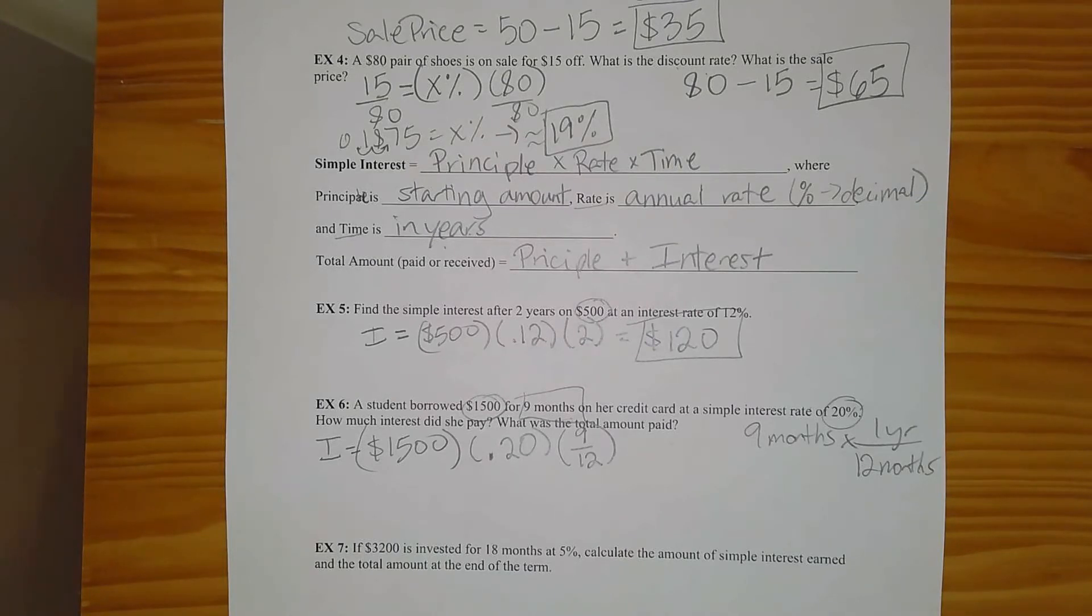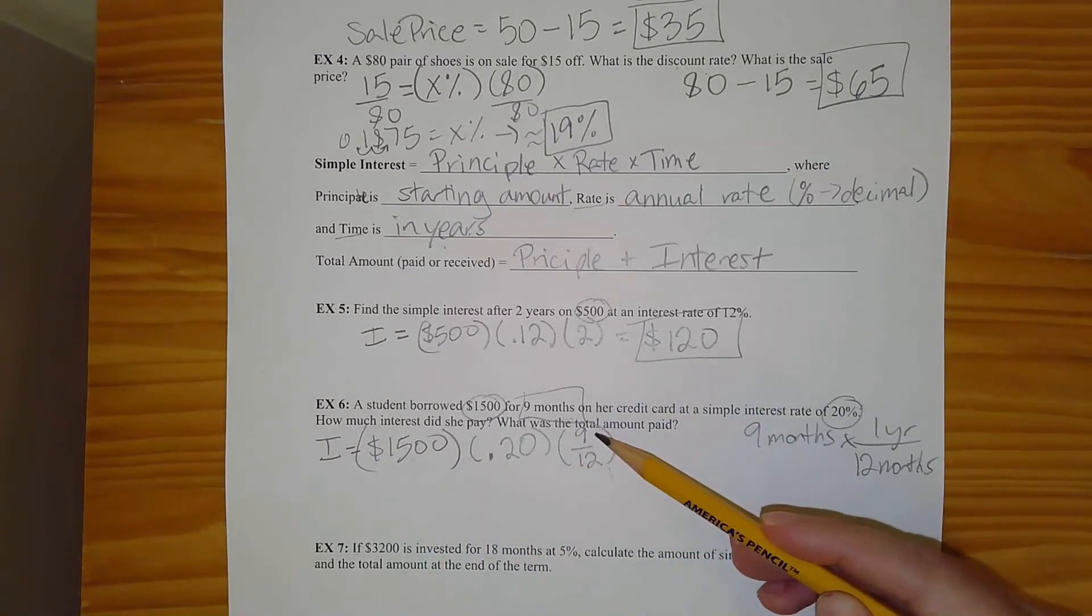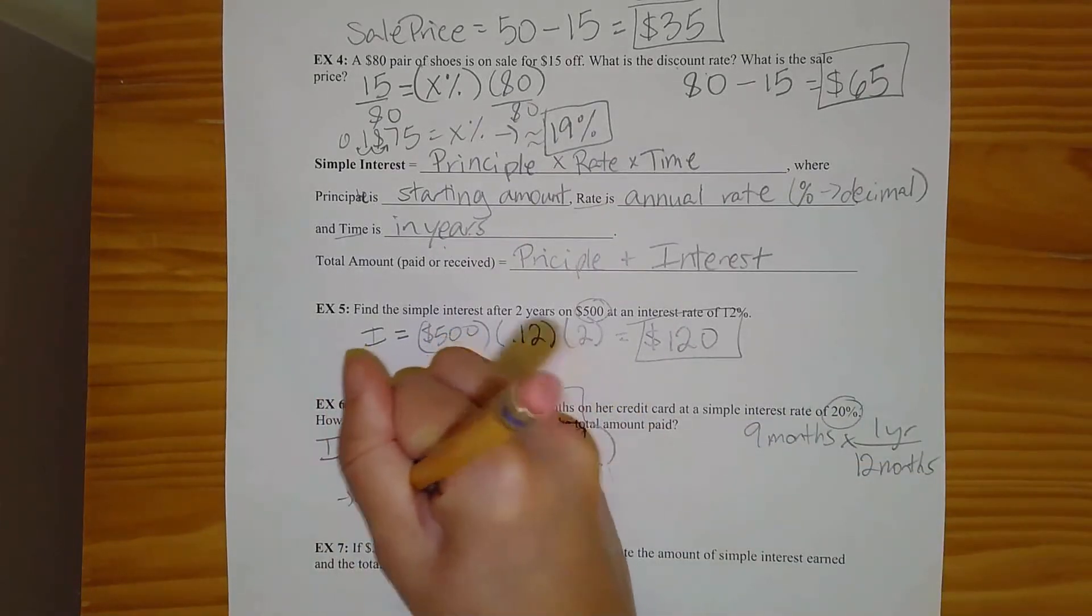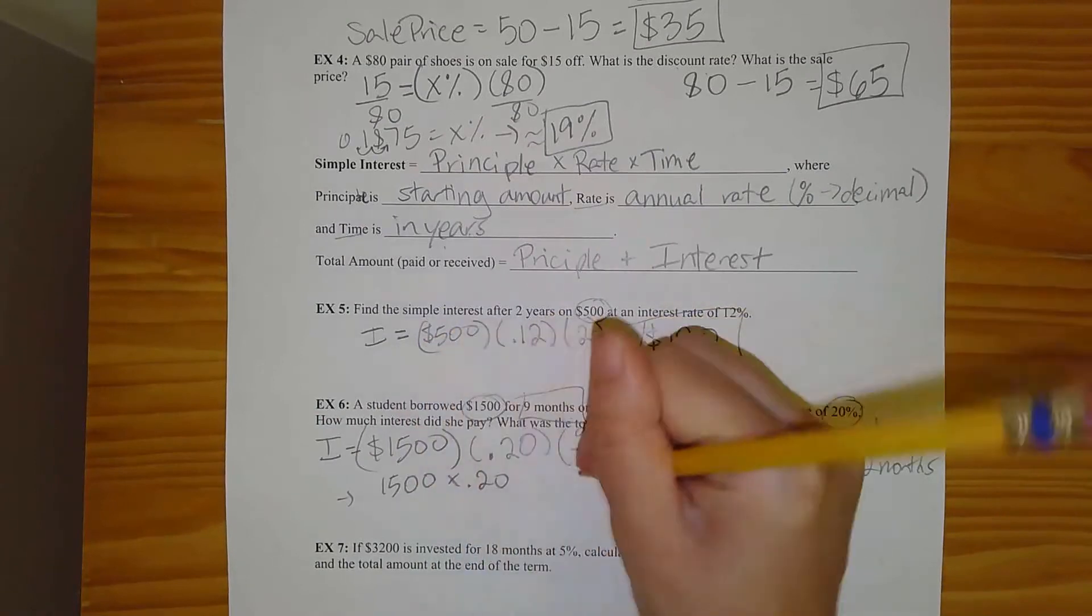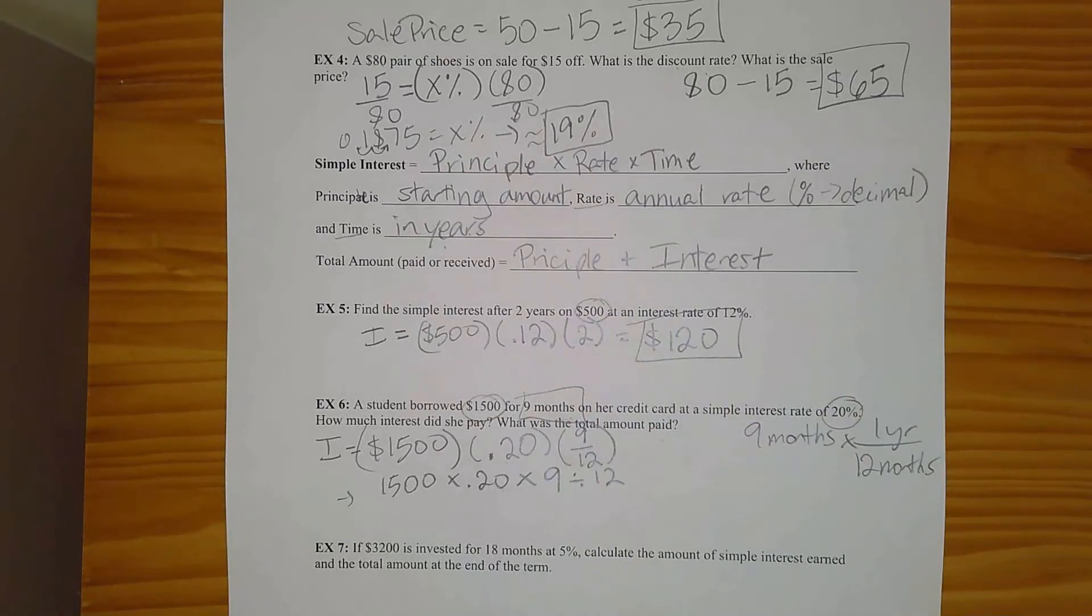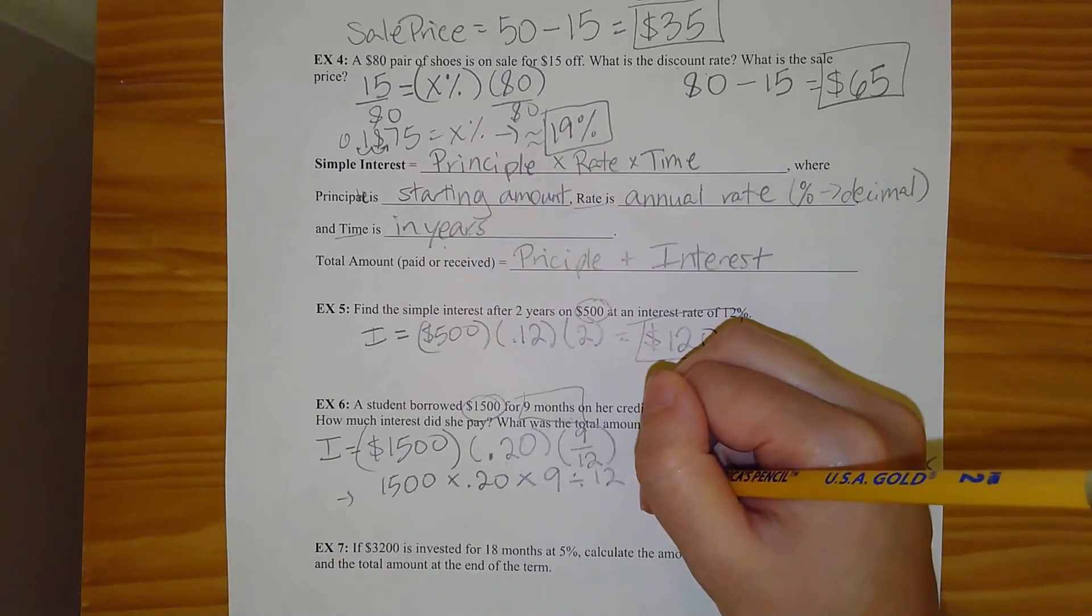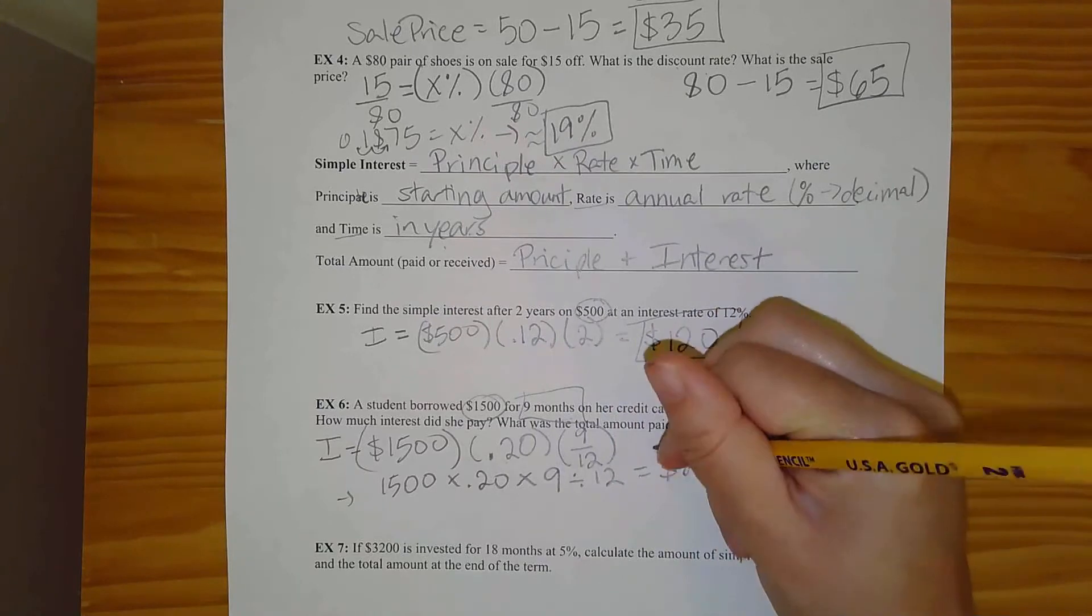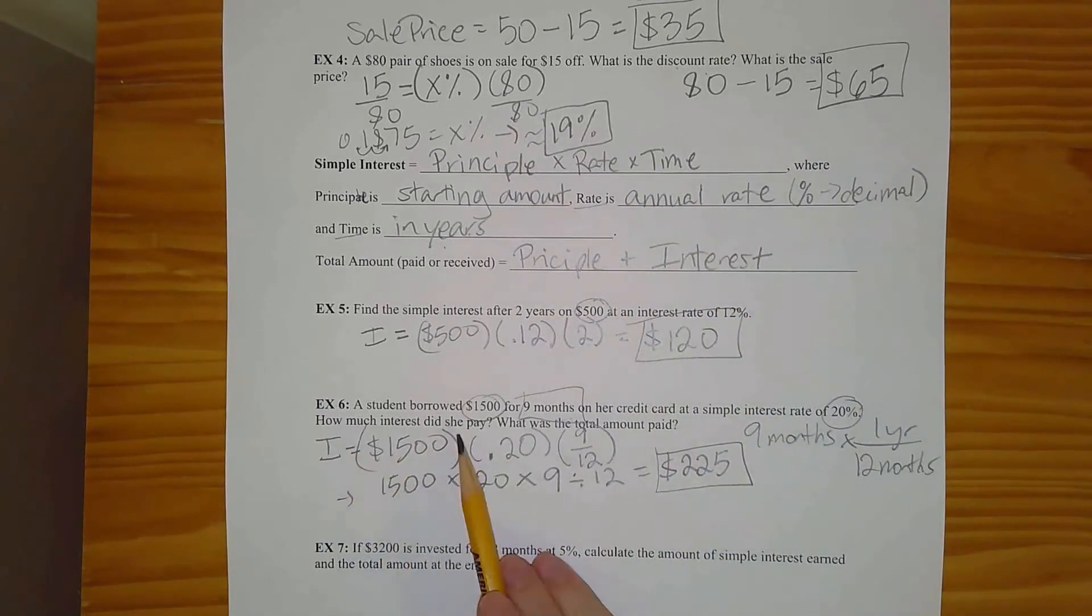So one thing that you can always do when you're doing the arithmetic is you could do 1500 times 0.2 and then multiply by nine and divide by 12. So in your calculator, what you would do is 1500 times 0.2 times 9 divided by 12. And that'll get you there. So for our interest on this one, it works out pretty nicely. We get $225. And that's the first question.